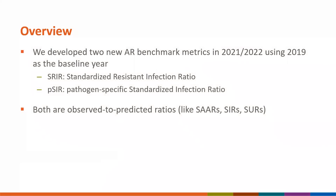We developed our two new AR benchmark metrics in 2021 and 2022, using 2019 data reported to the NHSN AR option as the baseline year. The first metric, the SRIR, is the standardized resistant infection ratio. The second, the PSIR, is the pathogen-specific standardized infection ratio, and both metrics are observed to predicted ratios, just like SARs, SIRs, and SURs.